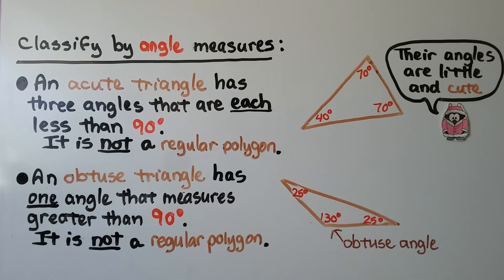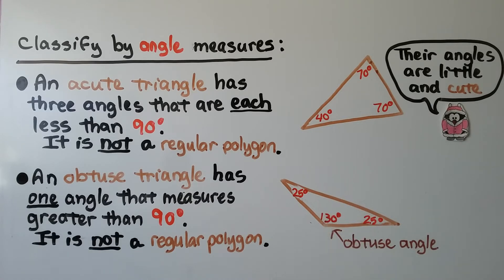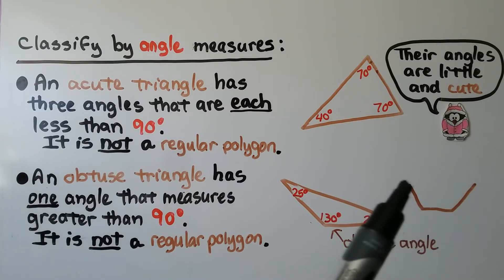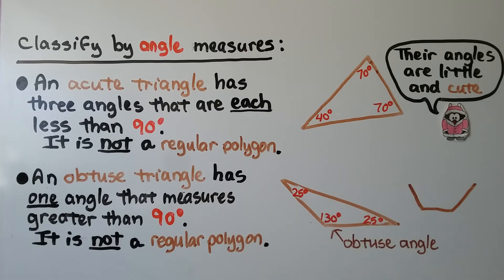An obtuse triangle has one angle that measures greater than 90 degrees. It's not a regular polygon. An obtuse triangle can't have more than one angle measure greater than 90 degrees, because otherwise it wouldn't be a triangle. If it had two angles greater than 90 degrees, it wouldn't be a closed triangle — it wouldn't be a triangle at all. So it can only have one obtuse angle.